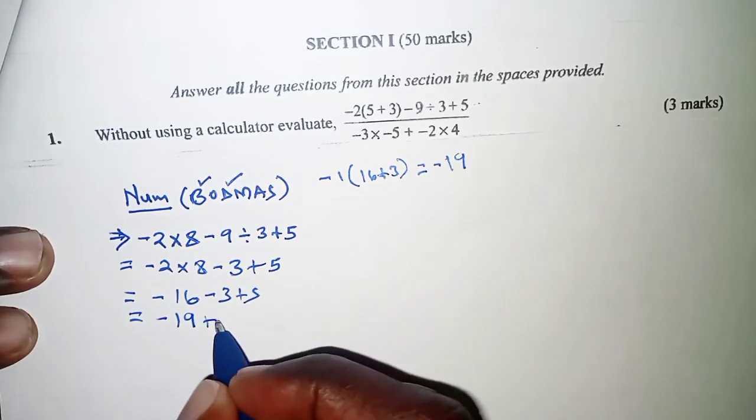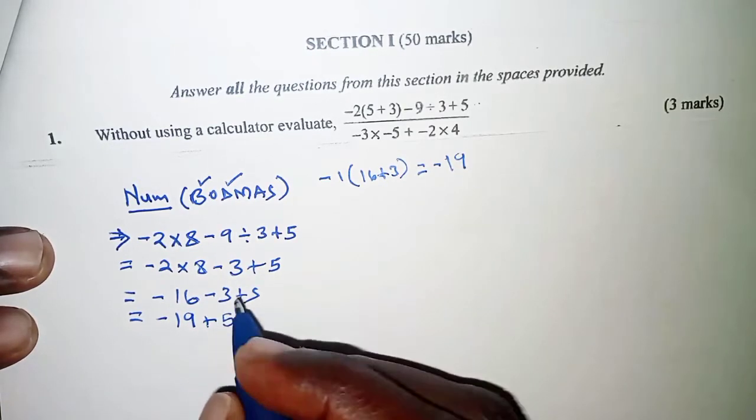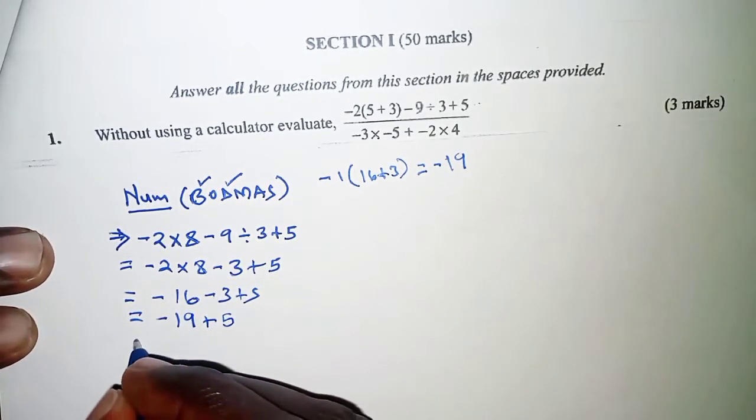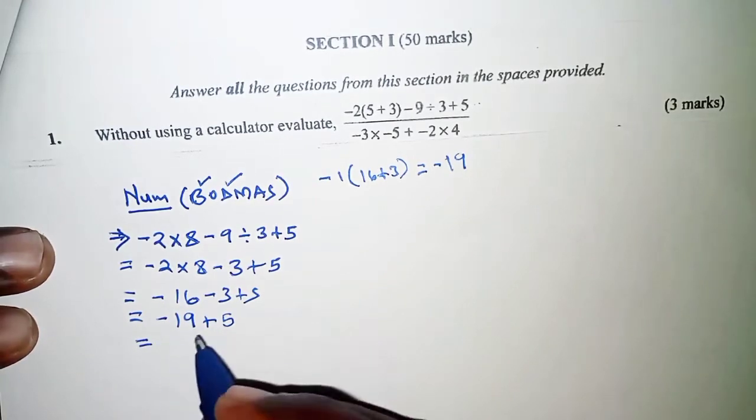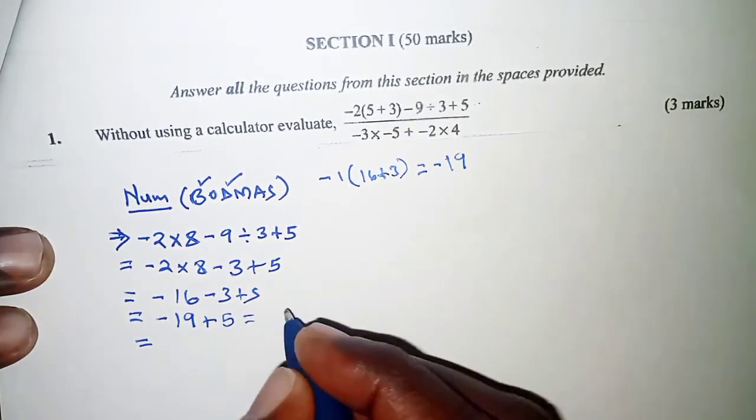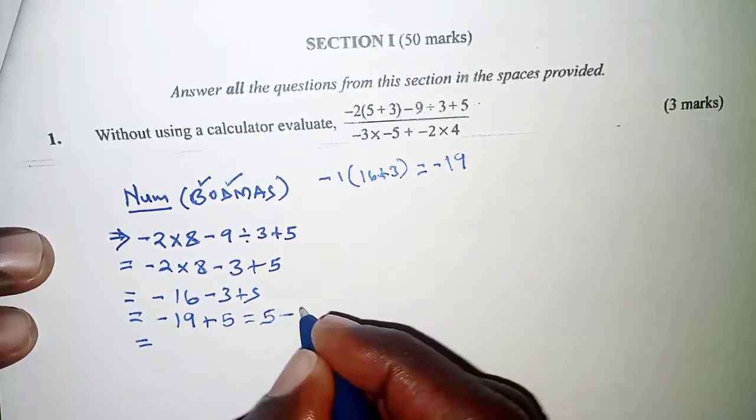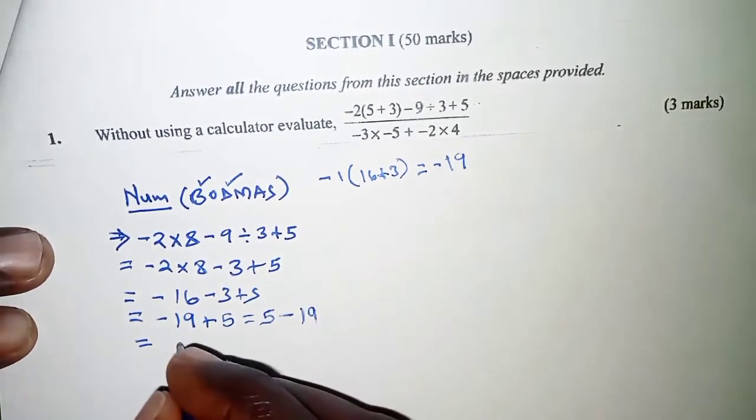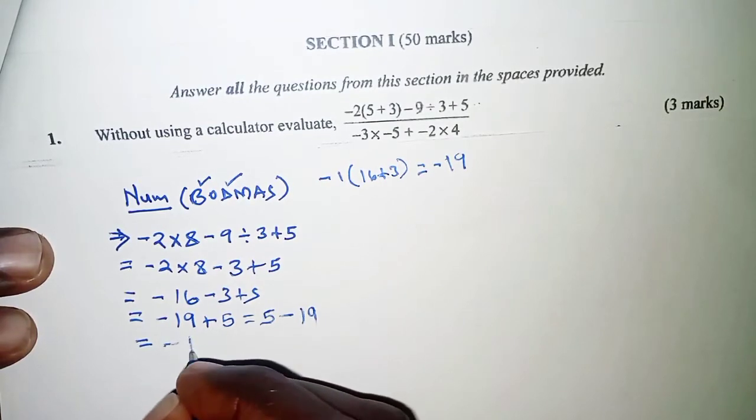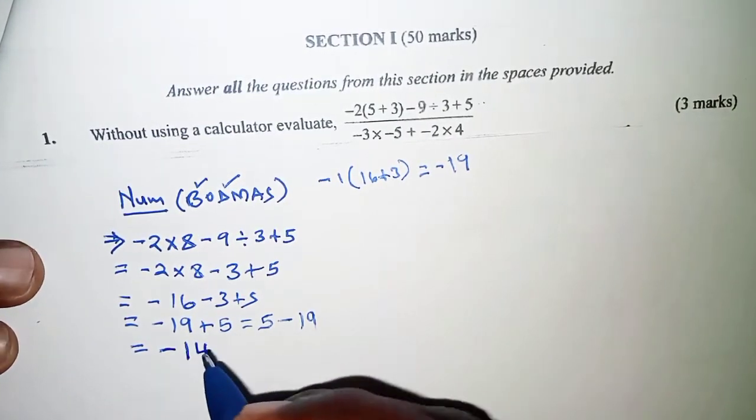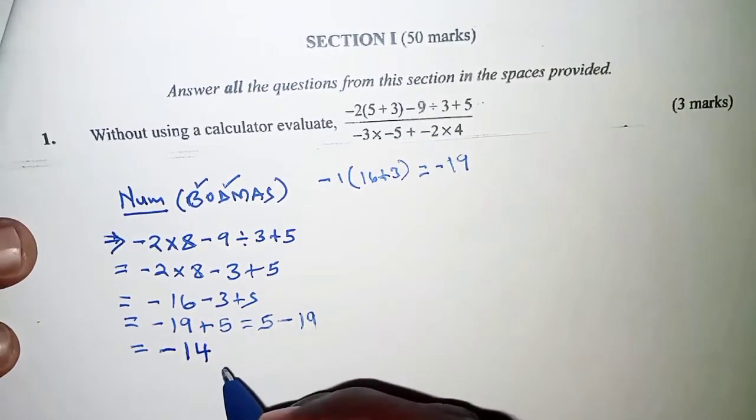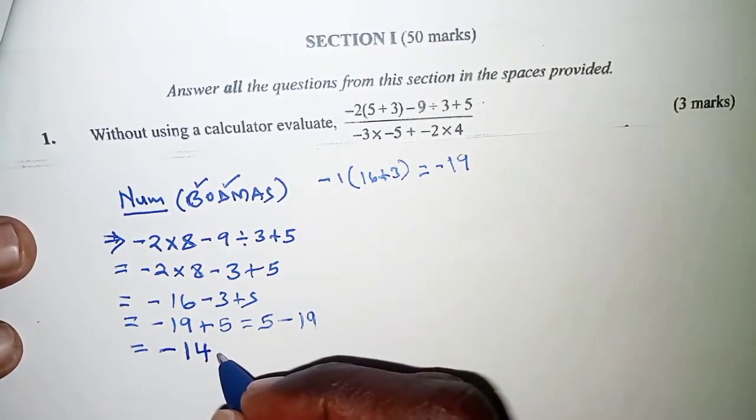That will be negative 19, just like we had seen. And then add it to 5. Remember, you can rearrange this. This is the same as saying 5 minus 19, and this is negative 14. So that is for the numerator.